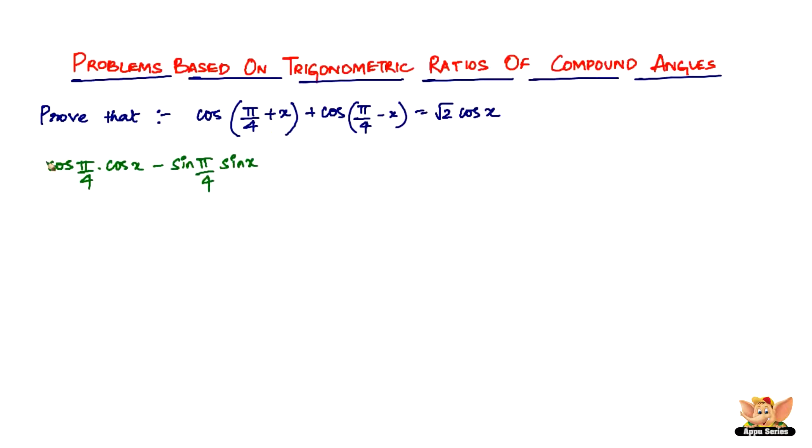So that's what is cos a plus b, right? So this comes under one bracket and this one is plus cos pi by 4 minus x. So that'll be cos a, that is cos pi by 4 cos b plus sin a sin b, right?